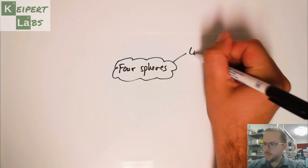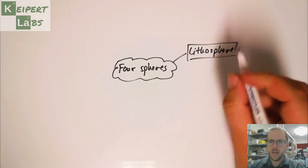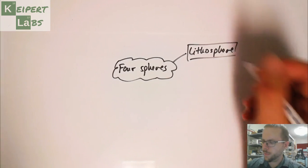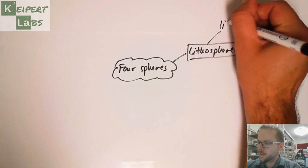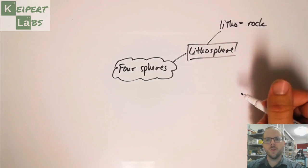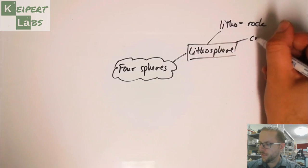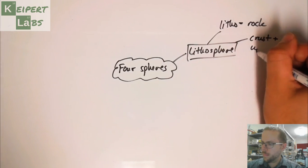So we're going to start off by thinking about the lithosphere. We're going to go through each one, kind of constructing this mind map as we go. In Greek this word litho refers to rocks.